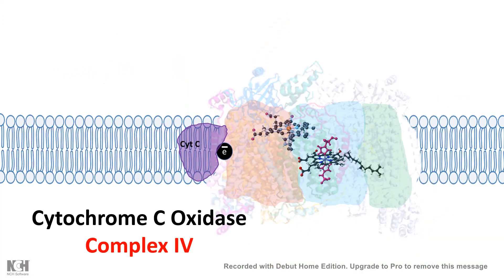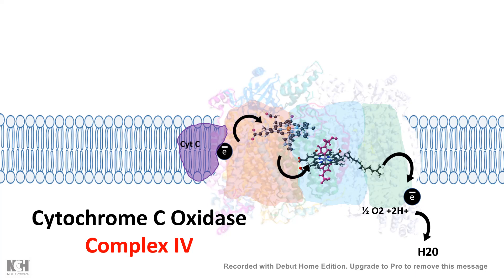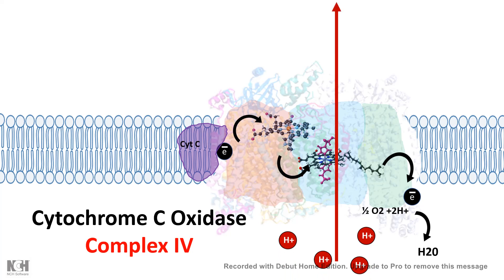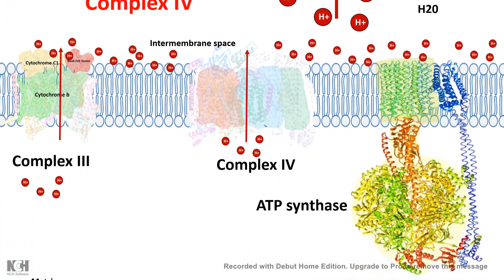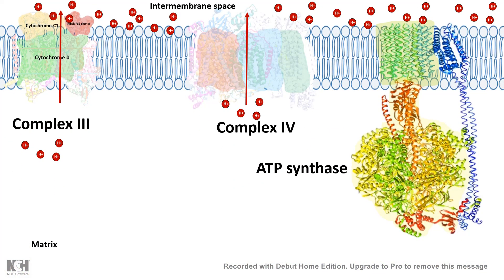Cytochrome C takes this electron and gives it to complex 4. Complex 4 has three major subunits, two heme moieties, and a copper ion. Electrons are sequentially transferred through these centers and ultimately combined with oxygen to form water — so oxygen is reduced to water by cytochrome C oxidase activity. In this process, four hydrogen ions are also transported to the intermembrane space, resulting in significant proton accumulation there, forming a proton gradient with more protons in the intermembrane space and fewer in the matrix.